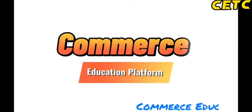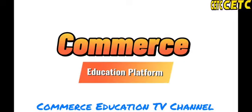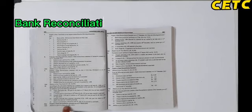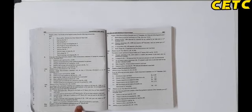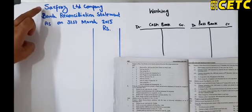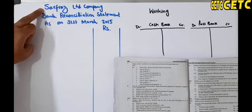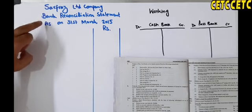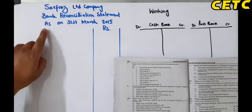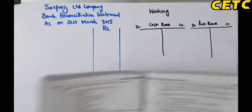Bismillahirrahmanirrahim. Commerce Education Platform, question 10: prepare a bank reconciliation statement as on 31st March 2015. We have made the bank reconciliation statement format. You need to complete three lines: first line has the company name, second has the statement name, and the third line has the date — 'as on'. In working, we have prepared both books.